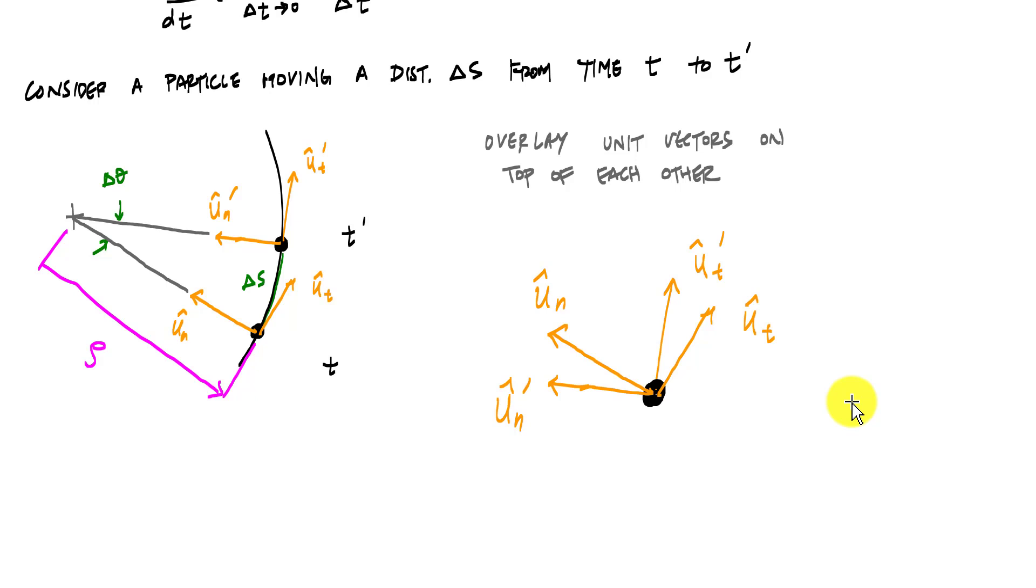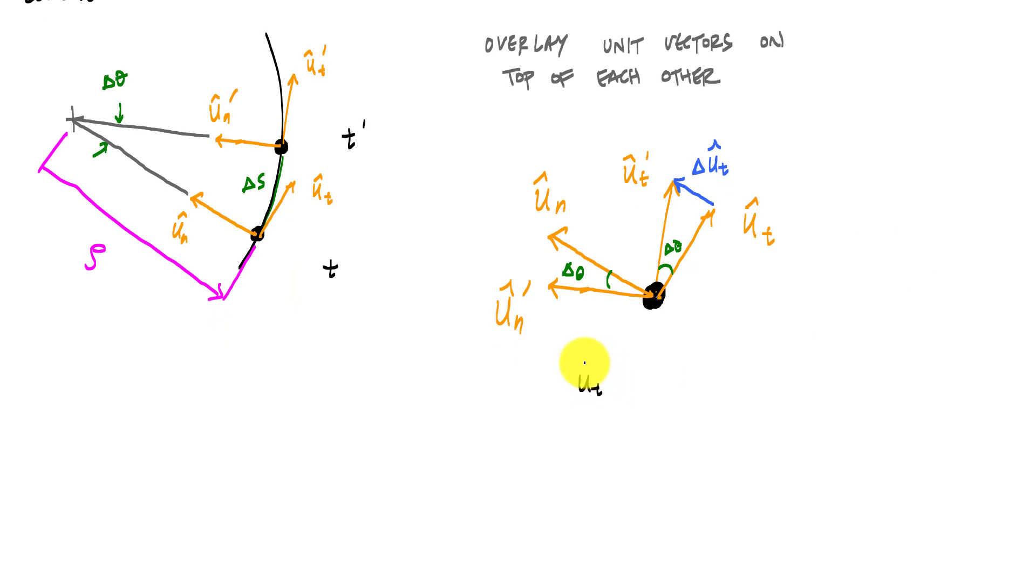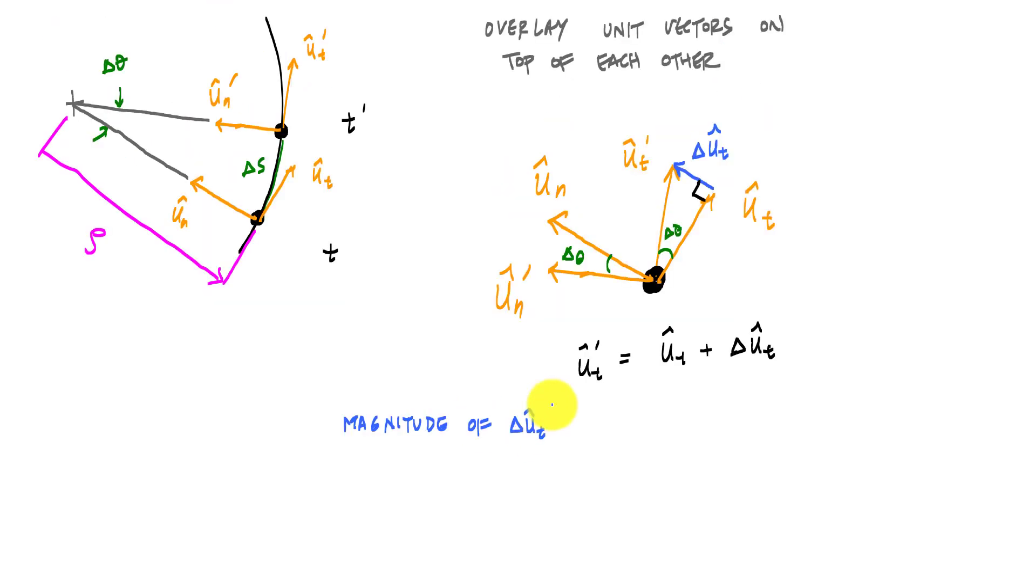So here zoomed in, my unit vectors at t and t prime drawn on top of each other. And what I'll notice is, I know that this angle right here is delta theta and this angle is also delta theta. And then if I look at the change in the tangential unit vector, going based on 90 degrees from its original, then I would have parallel to this original u_n hat, this blue line would be the change delta u_t hat like right there. The way that we would describe u_t prime would be by vector algebra: u_t hat plus delta u_t. And this would be 90 degrees right there.